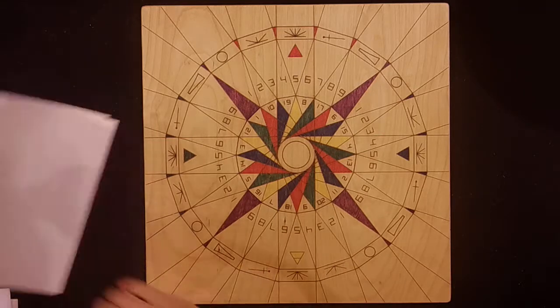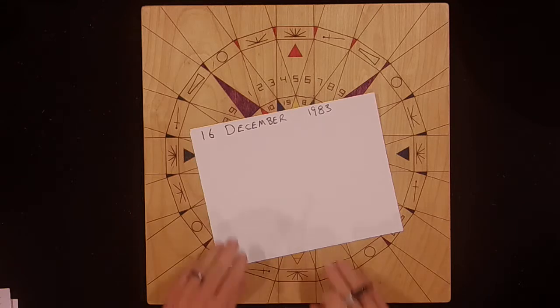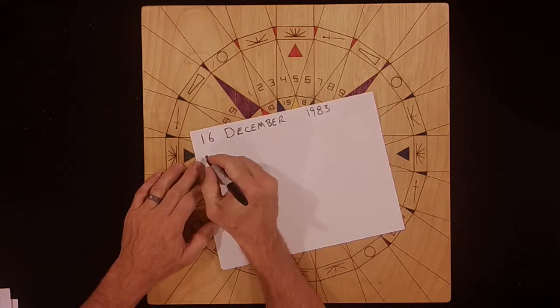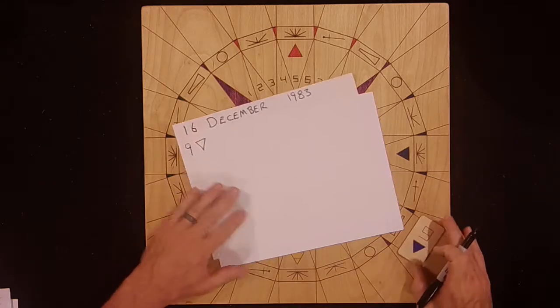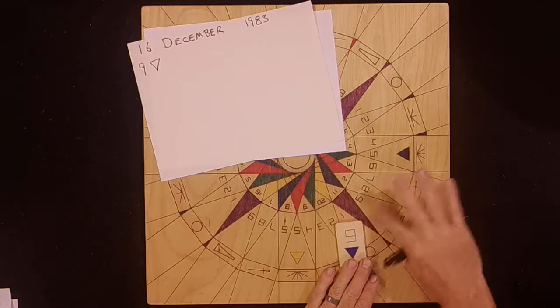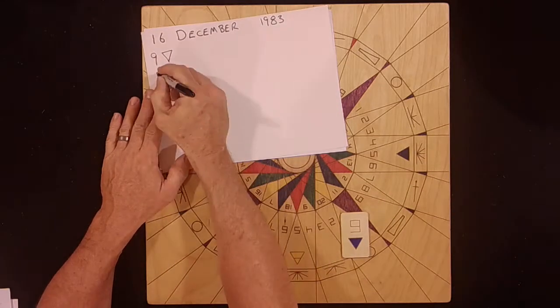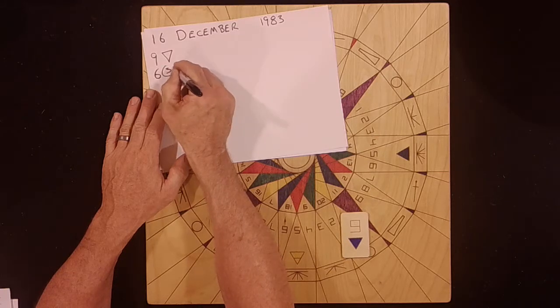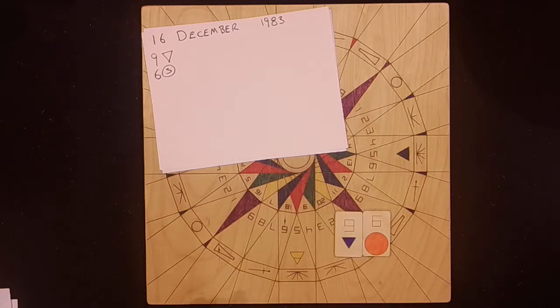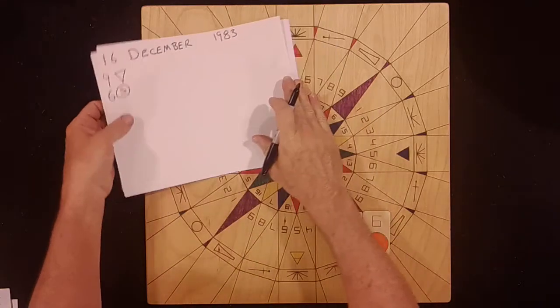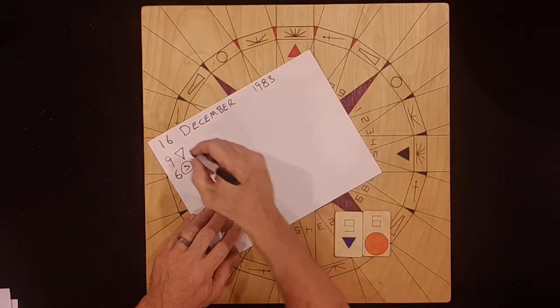So, the 16th of December is about the 9 of water. It's right here on the tool, the 9 of water. And, it's about the 6 of life. So, this is the energy that's going on on the inside, the inner energy.